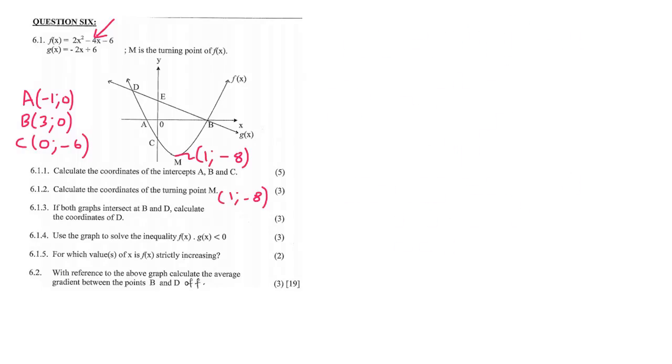Question 6.1.3: If both graphs intersected at B and D, determine the coordinates of D. To find where two graphs intersect you make these two equations equal to each other. So you end up with 2x squared minus 4x minus 6 equals minus 2x plus 6. Then take everything to one side because it's probably going to be a trinomial.